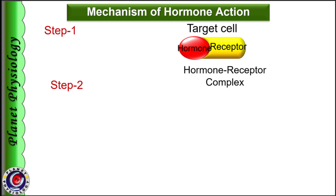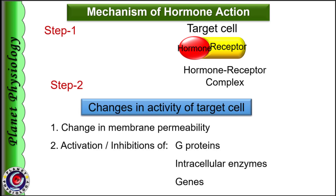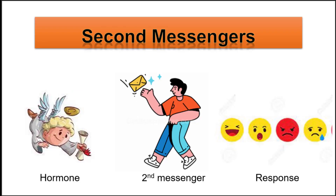This complex brings about changes in the activity of target cell through various mechanisms. Target cells may show changes in membrane permeability, or activation or inhibition of G proteins, intracellular enzymes or specific genes. Being large hydrophilic molecules, protein or peptide hormones act through membrane receptors. Once they form hormone-receptor complex, they activate other molecules either in the cell membrane or within the cytoplasm which trigger the cellular response. These intracellular messengers are called second messengers.